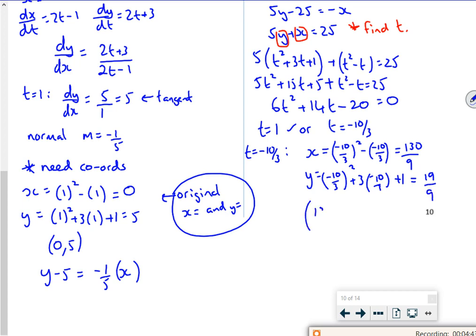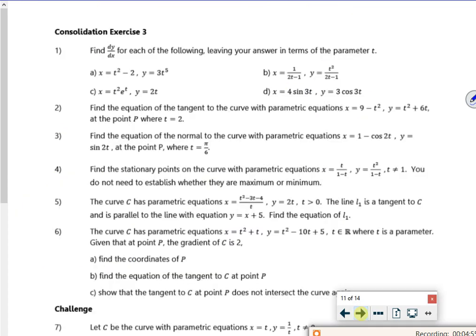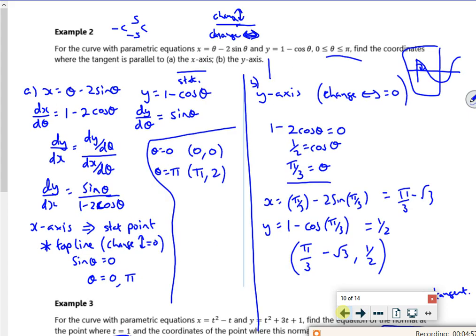So the coordinates are 130 over 9, comma 19 over 9, where it meets again. And I reckon that's it. That's going to be the end of that one. More of those. More of them to have a go out on the consoles. If it works. So well done everybody. Bye bye.